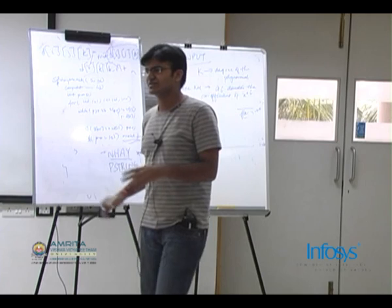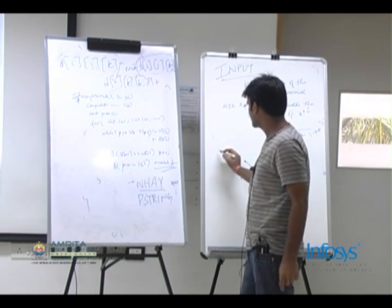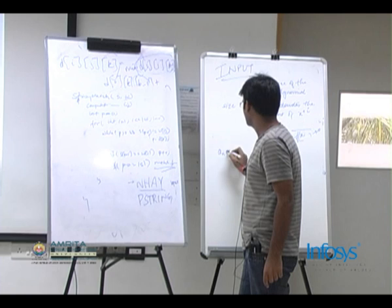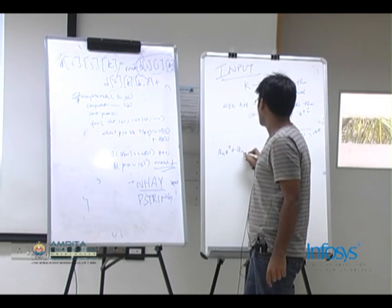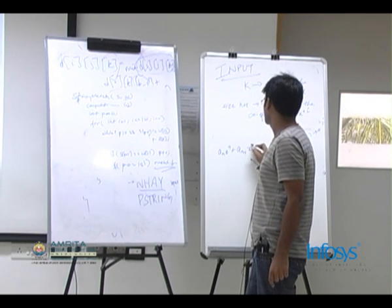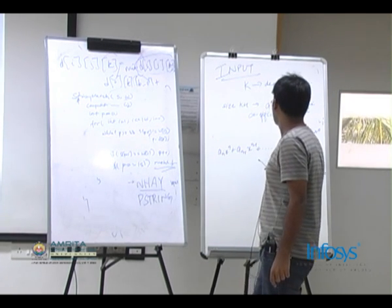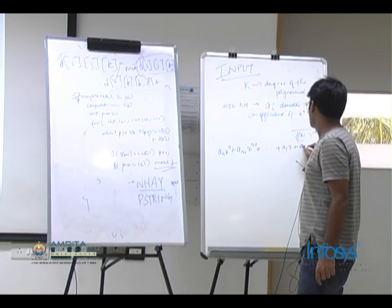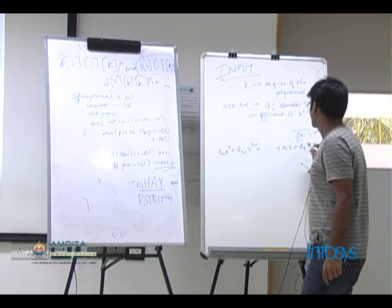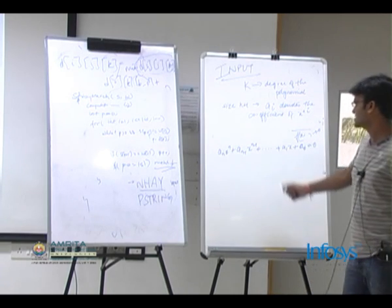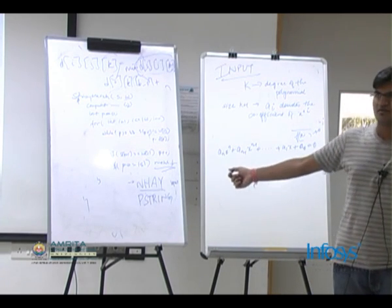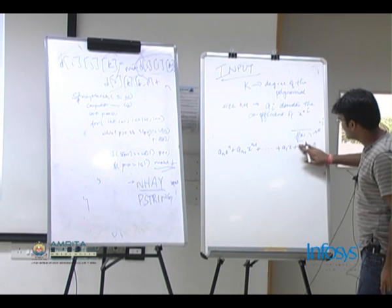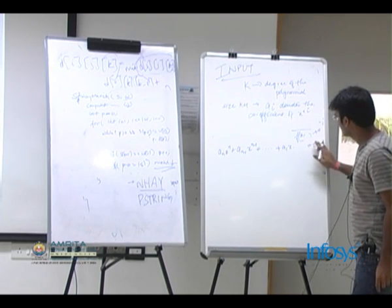So let's say our polynomial is a_n·X^n + a_{n-1}·X^{n-1} + ... + a_1·X + a_0. This is what we have to solve. Let's take a_0 from here to the other side, and you can take X common from the remaining terms.